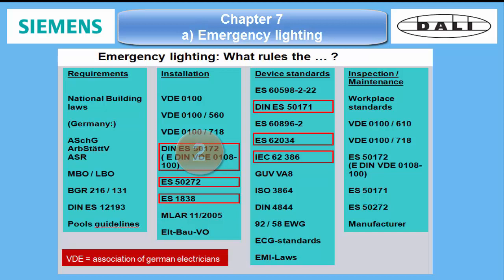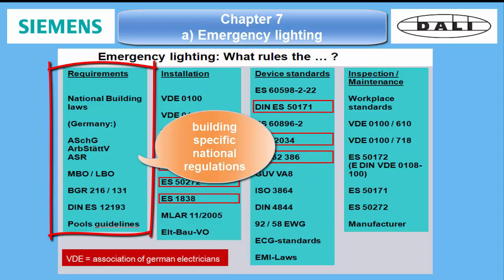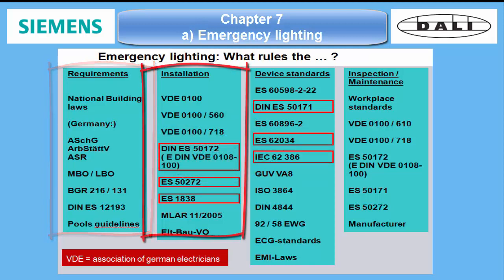Some of the standards and regulations have statements in more than one of these groups. First, the type of building matters in how an emergency lighting system has to be designed. It is also in most cases a matter of national regulations, for example for factories, hospitals, office or sports buildings, etc.